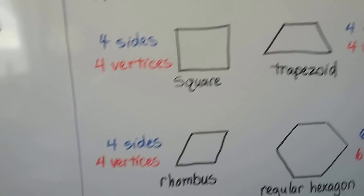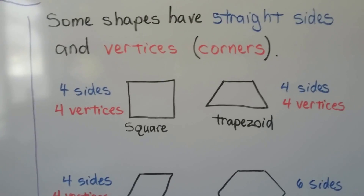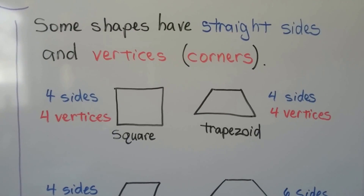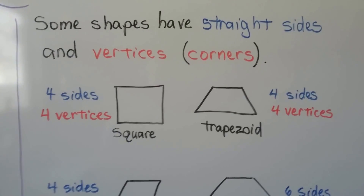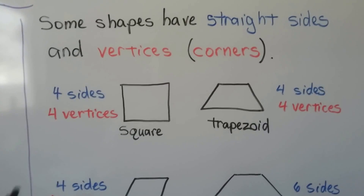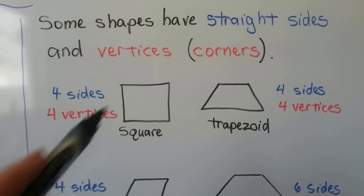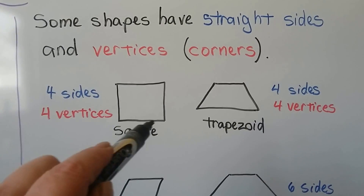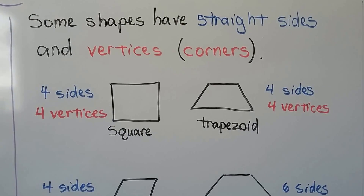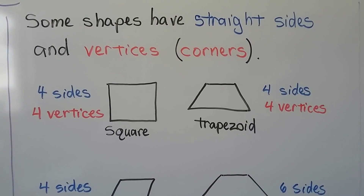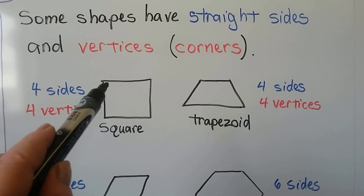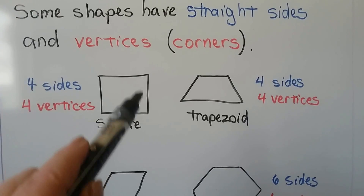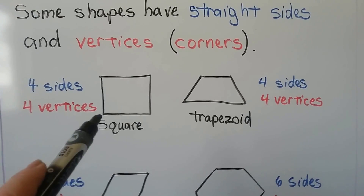Some shapes have straight sides and vertices. Vertices are corners. A square has four sides — one, two, three, four — and it has four vertices: one corner, two, three, four.